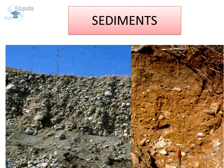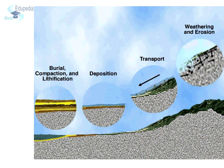The deposition of these clasts and subsequent compaction and cementation will result in formation of rocks. Such rocks are arranged in layers, hence they are also called stratified rocks. Sedimentary rocks are so called because they are formed out of sediments, which is the term given to broken rock fragments.